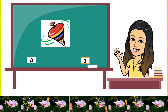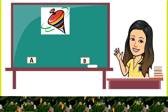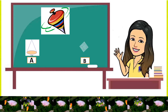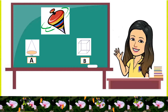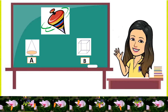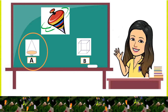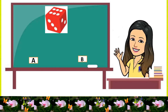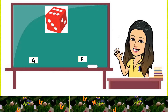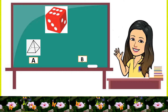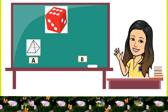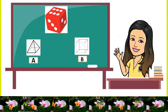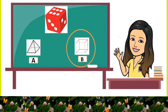Number 4: top. Is this similar to A. Cone or B. Cube? Correct! Letter A. Last, we have a dice. Is this similar to A. Pyramid or B. Cube? Wonderful! It is a cube.